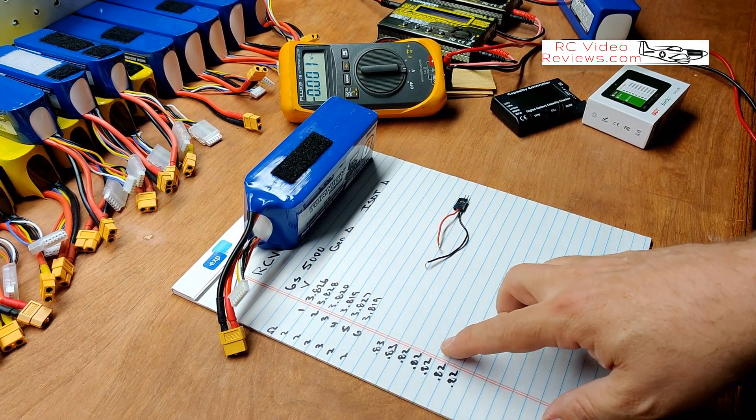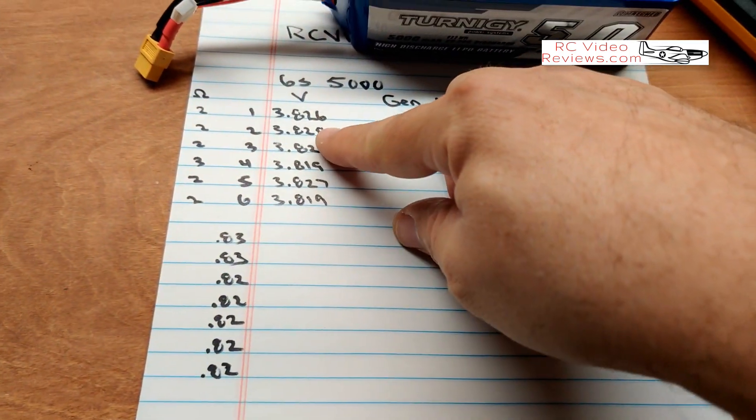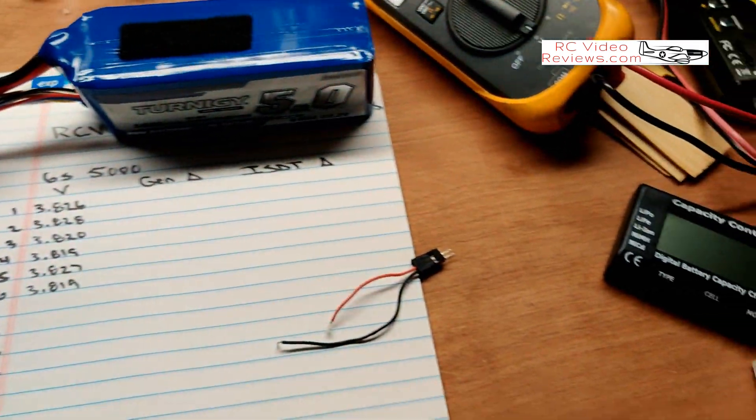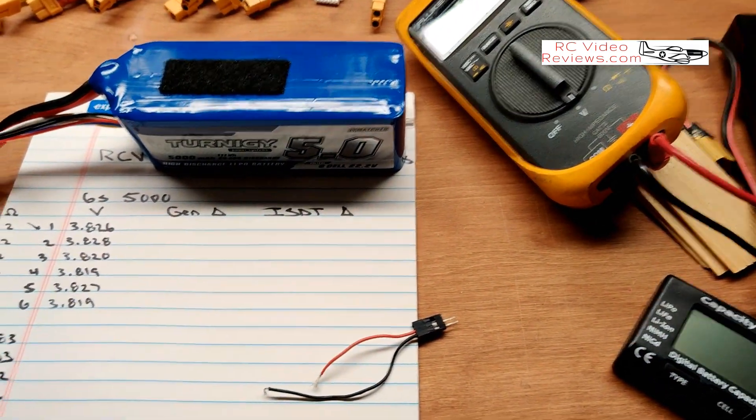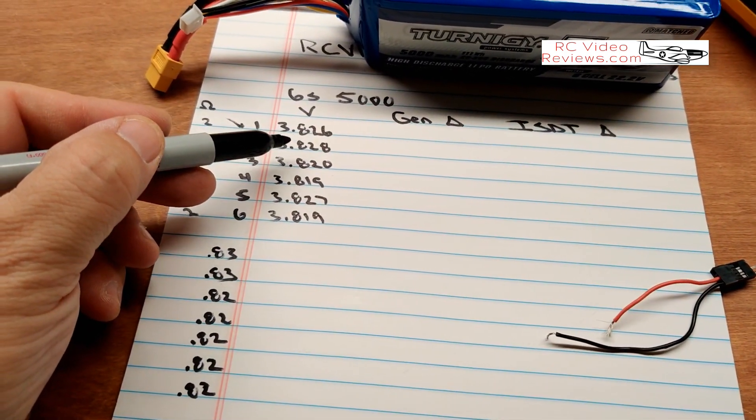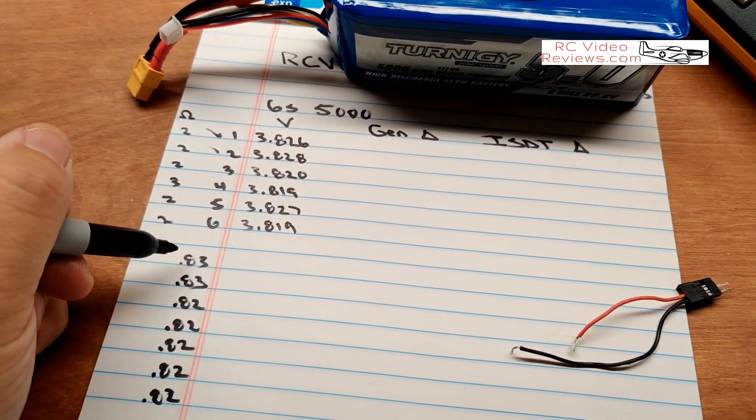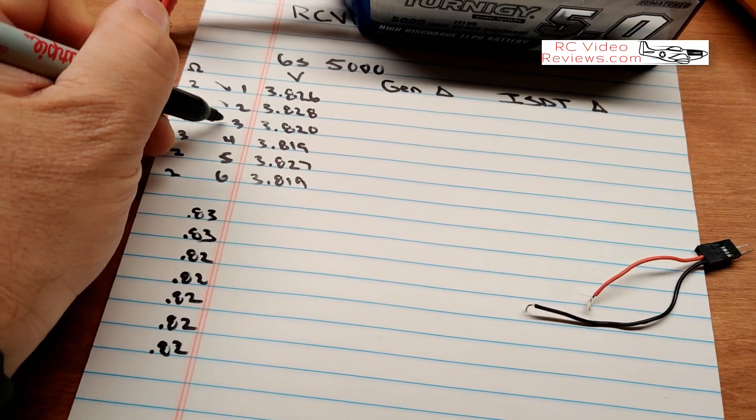All right, so let's see how that compares against the charger. So 3.826 against 3.83. So if I rounded that up, I would say that's accurate. I'm going to put a check mark there. 3.828, if I round that up, I'd say that's accurate. 3.820, round down. Or actually it's right on the money. I'd say that's accurate.